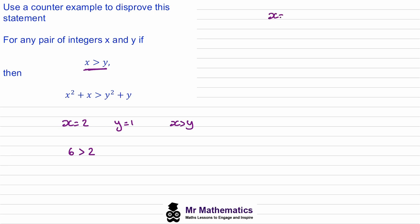If we say that x is equal to 2 and y is equal to negative 3, then 2 squared plus 2 is still 6, and y squared plus y — that's negative 3 squared plus negative 3 — becomes 6. So 6 is not greater than 6; it's not greater than itself. This example disproves the statement.